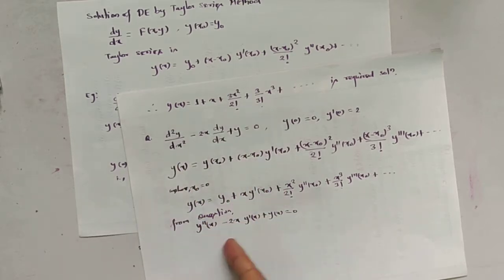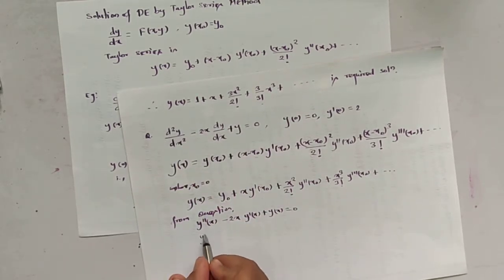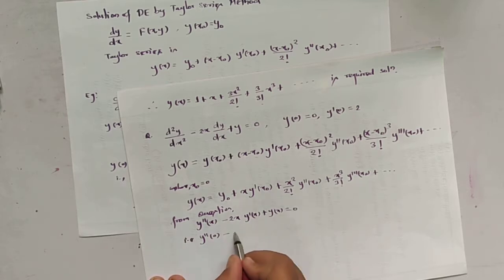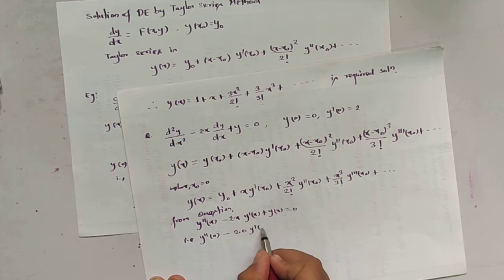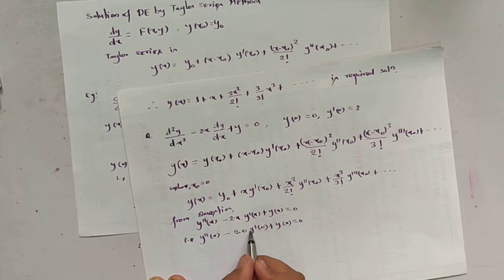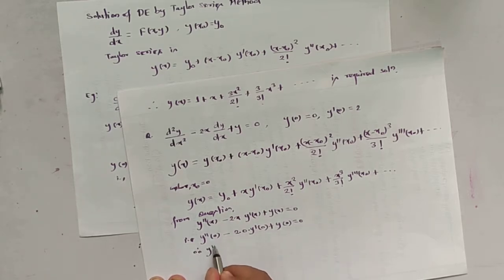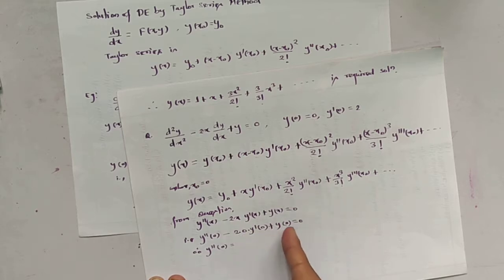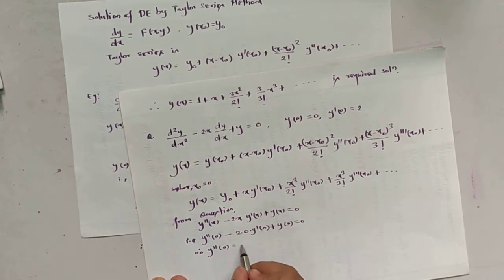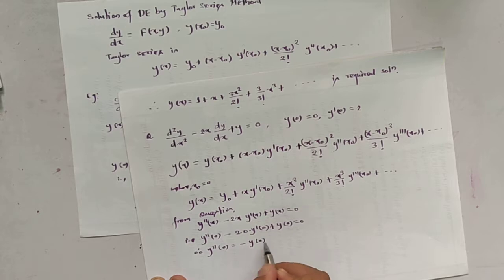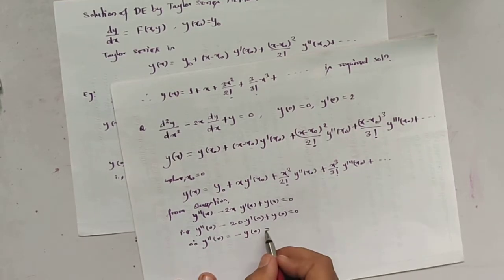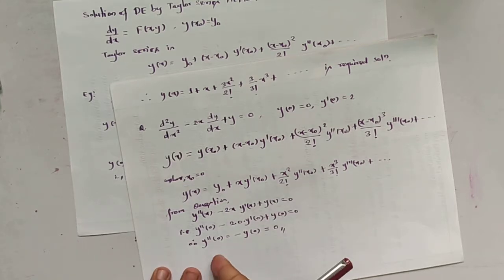It can be converted to the form: putting x = 0, we get y''(0) − 2(0)·y'(0) + y(0) = 0. Therefore y''(0) = −y(0) = −0 = 0. So y''(0) = 0.